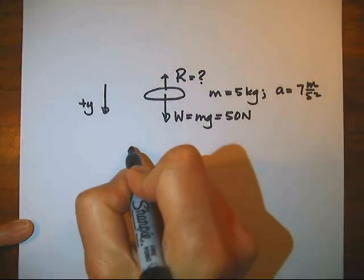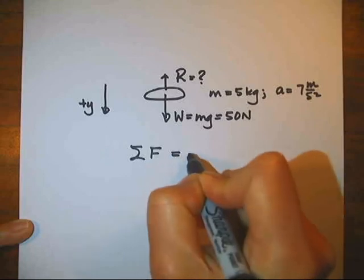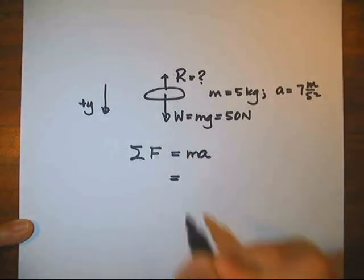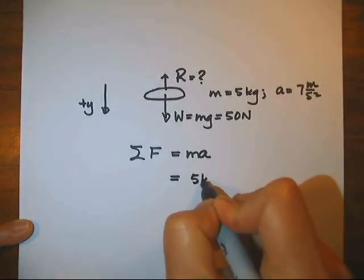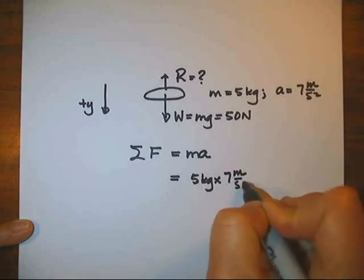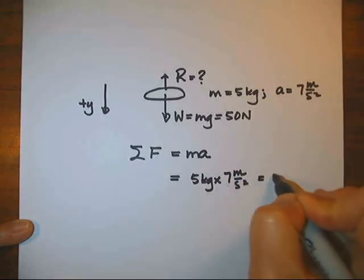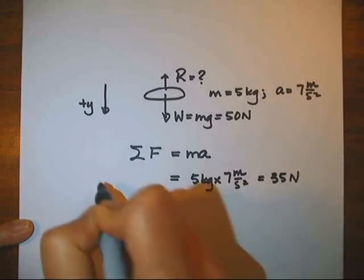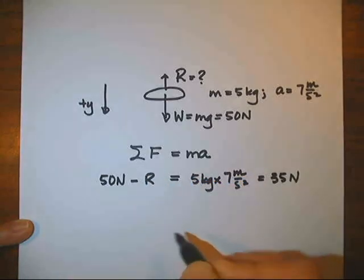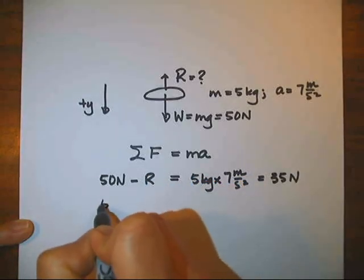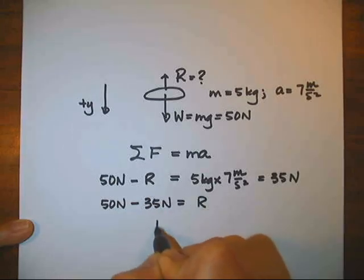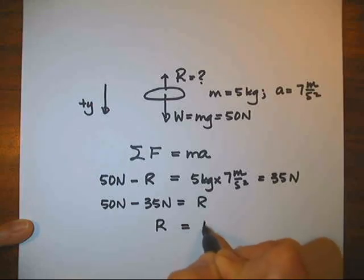The force of air resistance has to point upward, reducing the downward acceleration of the rock. Apply Newton's second law. The net force equals the mass times the acceleration. The net force equals 5 kilograms times 7 meters per second squared, or 35 newtons. The individual forces include the weight, which is downwards in the positive direction, and the unknown force of air resistance, which is upwards. We can solve for the force of air resistance, which is 15 newtons in the upward direction.